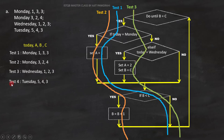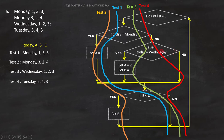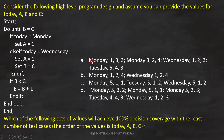Now let's analyze test 4: Tuesday, 5-4-3. Today is Tuesday, so this condition will become false. We will go to the else part of the code. This condition will also fail as today is Tuesday and not Wednesday. And since B is greater than C, this condition will fail. So this is the path we will cover by test 4. Now we can see that all the decisions are covered. So option A is the answer.